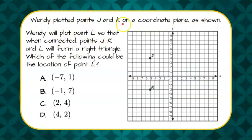Wendy plotted points J and K on a coordinate plane as shown. They're already plotted for us. Wendy will plot point L so that when connected, points J, K, and L will form a right triangle. Which of the following could be the location of point L?